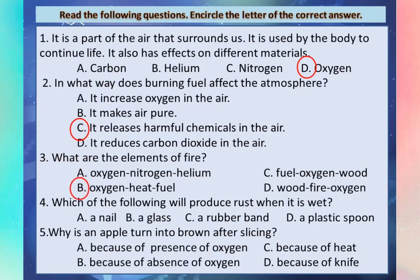Question 4: Which of the following will produce rust when it is wet? A. A nail. B. A glass. C. A rubber band. D. A plastic spoon. Answer: A. A nail.